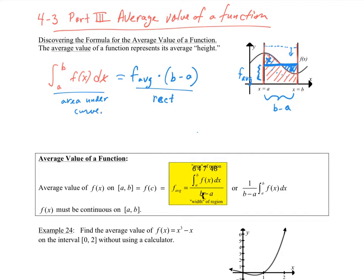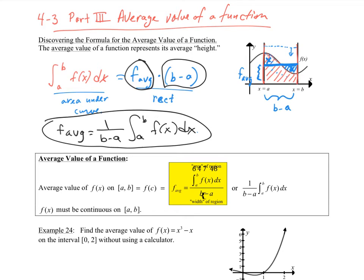So what do we want to solve for? Well, we want to solve for this f average. So when I do that, I'm going to get f average, and I'm just going to divide both sides by this b minus a. So f average is going to be 1 over b minus a times the definite integral a to b of f of x dx. That's where we're getting our average value from.